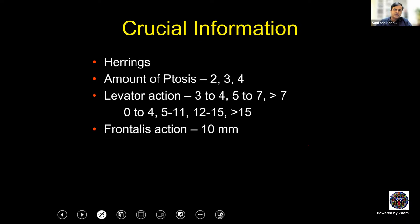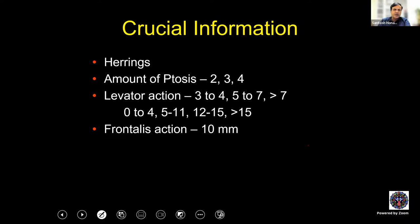Frontalis action is measured to decide, in cases of poor levator action, whether the lid can be elevated by frontalis — relevant for tarso-frontal sling surgery. To measure it, mark a dot on the suprabrow area in the pupillary axis and measure the excursion of the brow when the patient maximally elevates the eyebrow. More than 10 mm of frontalis action is considered adequate for a tarso-frontal sling; less than that risks undercorrection due to poor frontalis use.